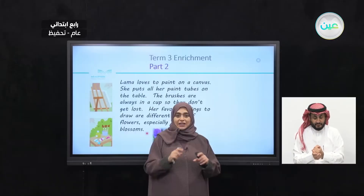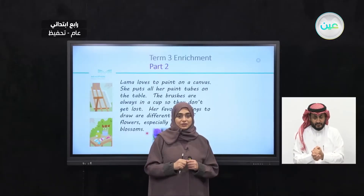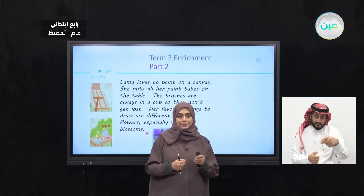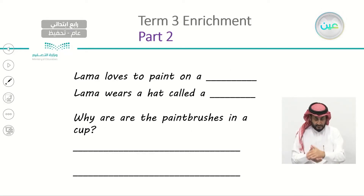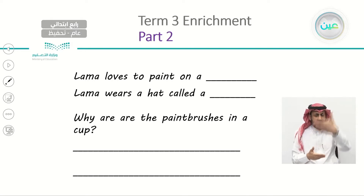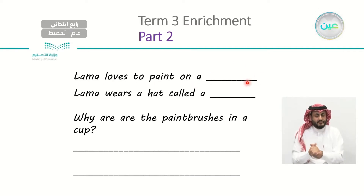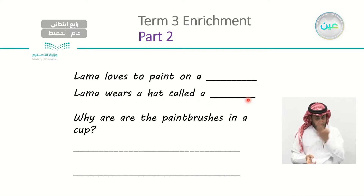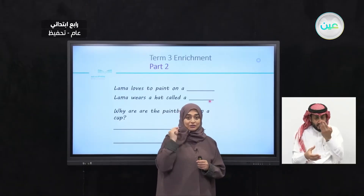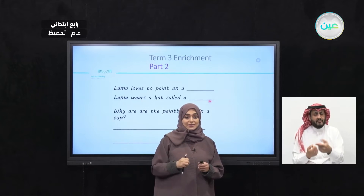Did you have a chance to read with me, even a few words? Now we're going to continue. Lemma loves to paint on a — what? Let's look at the questions. Let's read the questions together: Lemma loves to paint on a blank. She likes to paint on something. She wears a hat called a blank. Why are the paint brushes in a cup? Let's go back and read together and remember to look for these three pieces of information.